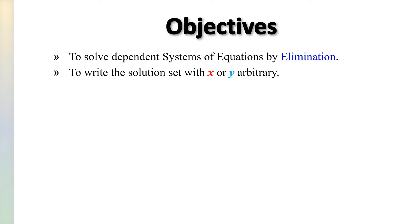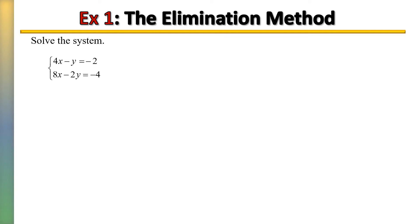In this lesson we're going to solve dependent systems of equations by the elimination method. We're also going to learn how to write the solution set with x or y arbitrary. We're going to solve it using the elimination method, also known as the addition method. It got its name because you can't solve for both x and y at the same time, so you have to eliminate one in order to solve for the other.